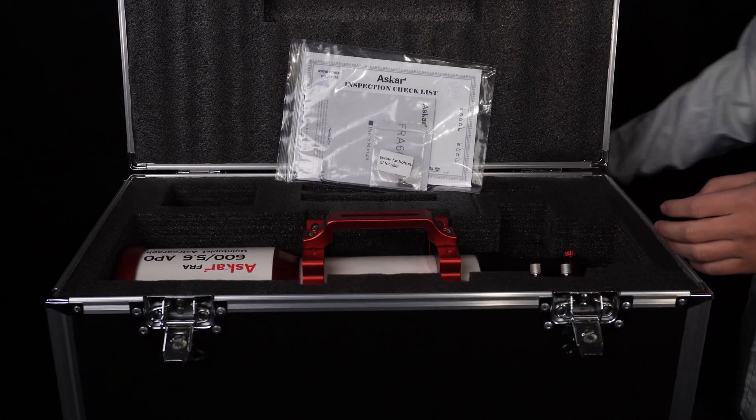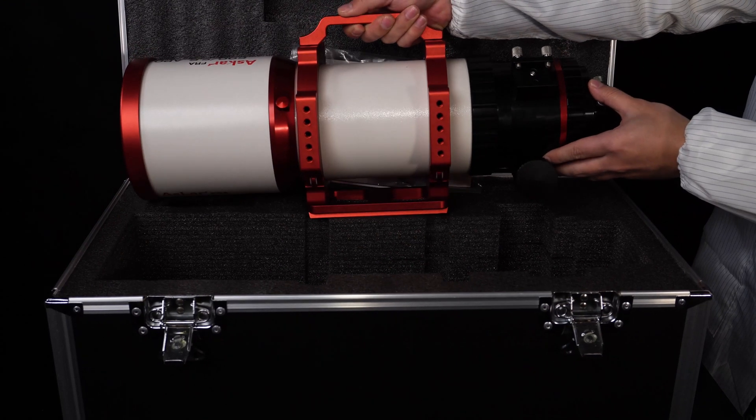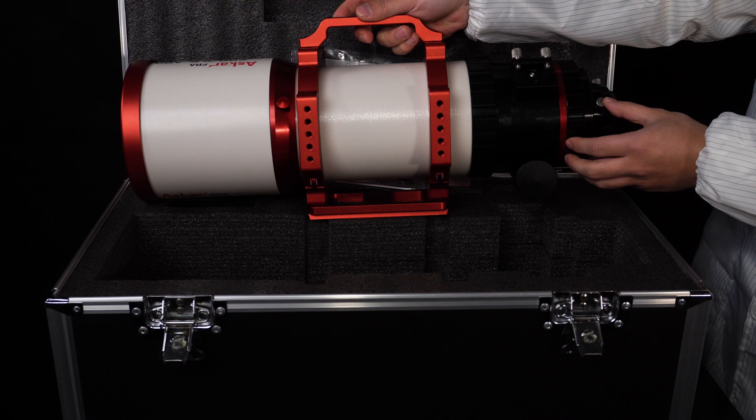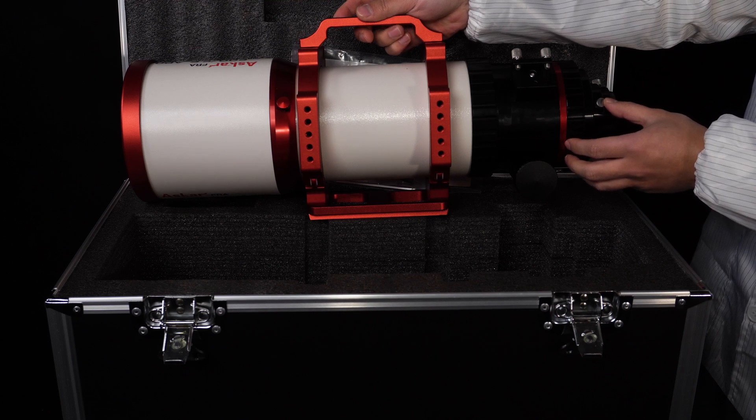And last, our big fellow, the Quintuplet astrograph. Since this astrograph does a good job in correcting field curvature, you don't have to add an extra flattener. And now let's move to the other characteristics of this astrograph.